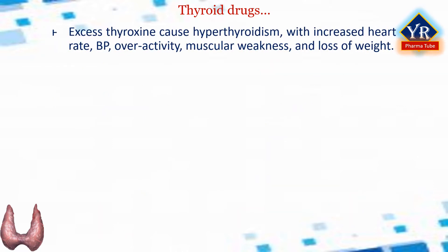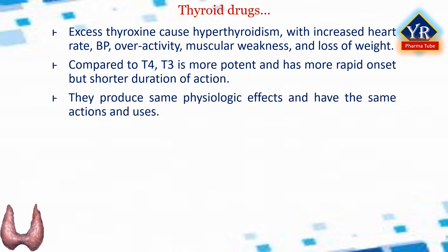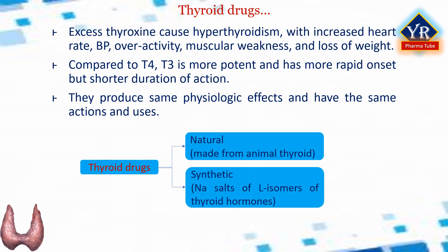Excess thyroxine causes hyperthyroidism with increased heart rate, blood pressure, overactivity, muscular weakness, and loss of weight. Compared with thyroxine, triiodothyronine is more potent and has more rapid onset and shorter duration of action. Despite the minor differences, these two hormones produce the same physiological effects and have the same actions and uses. Thyroid drugs can be natural or synthetic hormones; they may contain T3, T4, or both. Natural thyroid drugs are made from animal thyroid. Synthetic thyroid drugs are actually the sodium salts of L-isomers of the hormones.